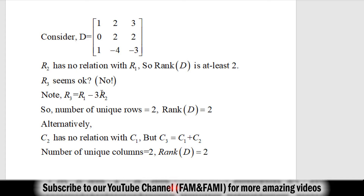Multiplying row 2 by 3 and subtracting from row 1: 0×3=0, subtract from 1 gives 1; 2×3=6, subtract from 2 gives −4; 2×3=6, subtract from 3 gives −3. So row 3 depends upon row 1 and row 2 via the relation R3 = R1 − 3R2. Therefore there are only 2 unique rows — row 1 and row 2 — and the rank of matrix D is 2.